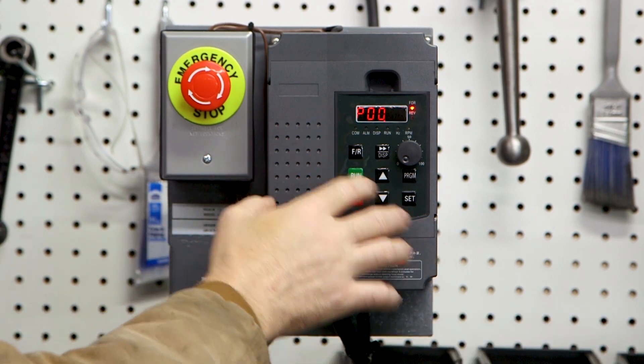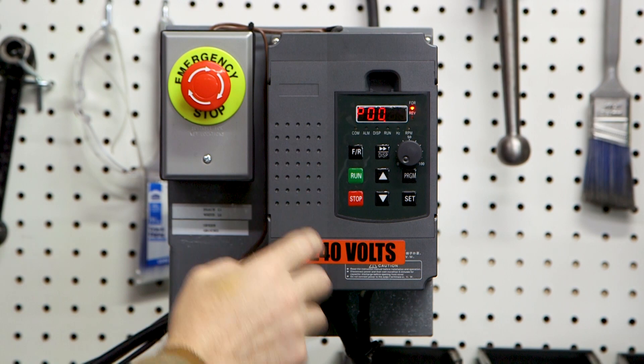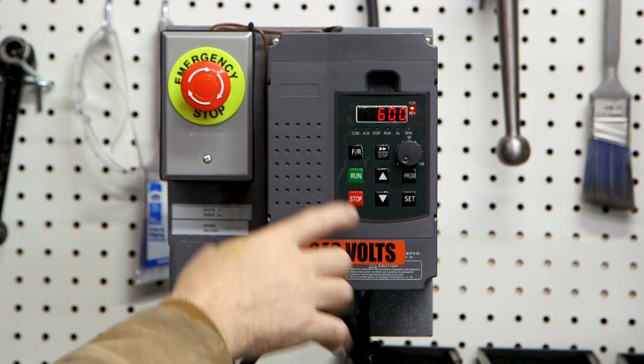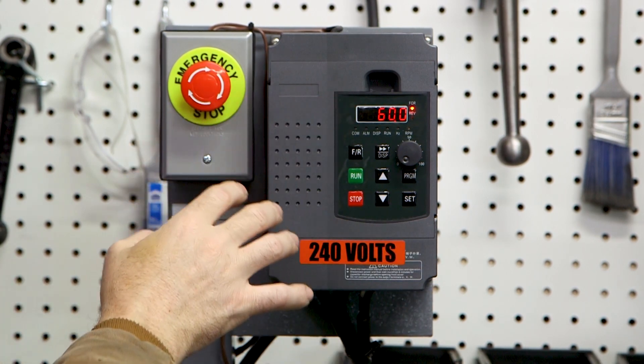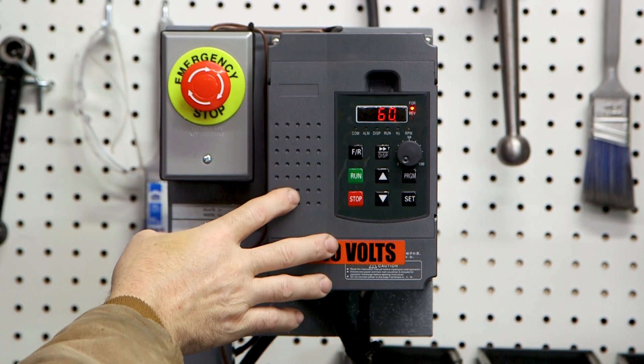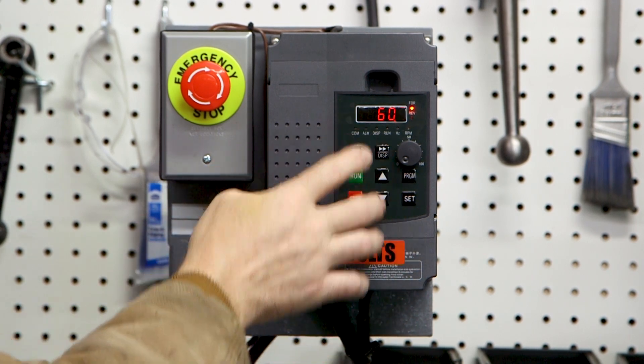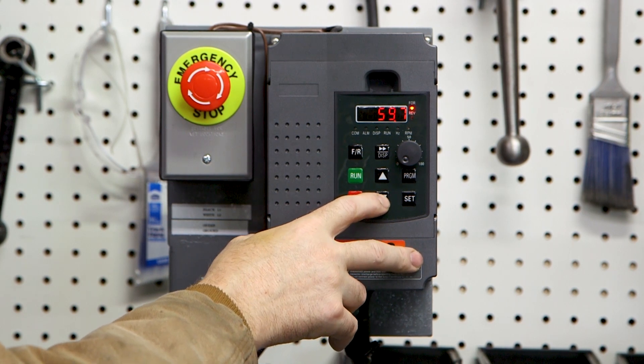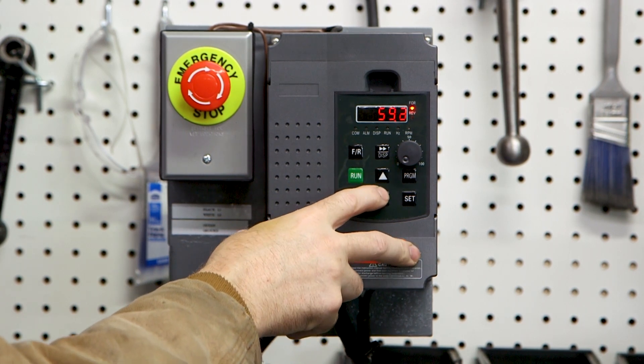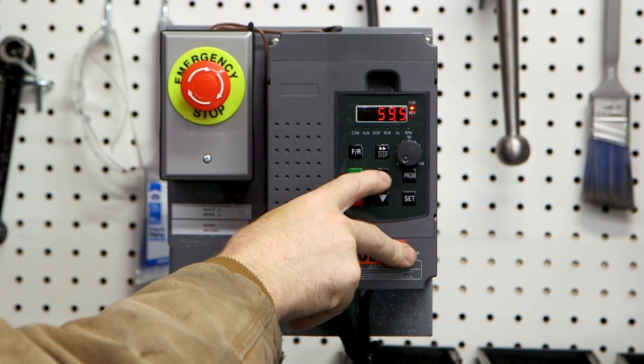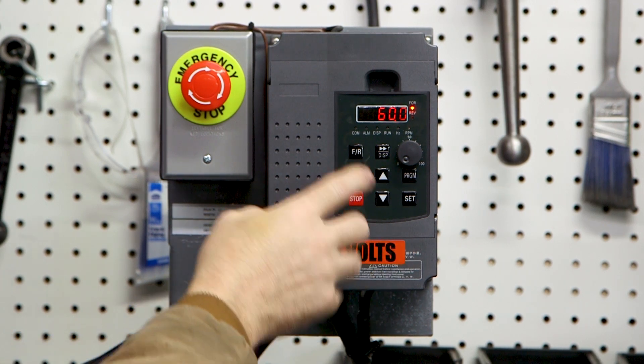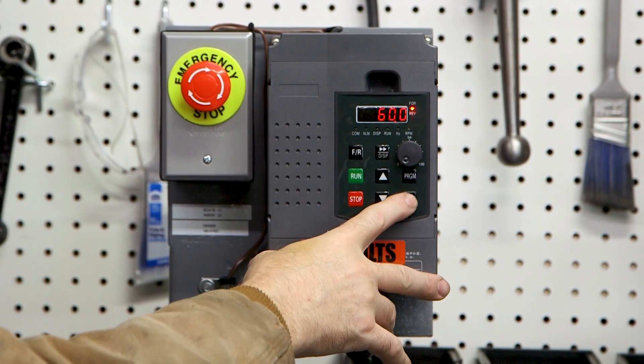So to set this, you've got your P code flashing and you hit set. And mine is set to 60 because I already changed it. If you just turn this VFD on right out of the box, this will be set at 50. To change that, you use the arrow buttons and you set this to what you need. So in the US, we have 60 hertz power. So that's what I set it to. And then to get it to take, you hit set.